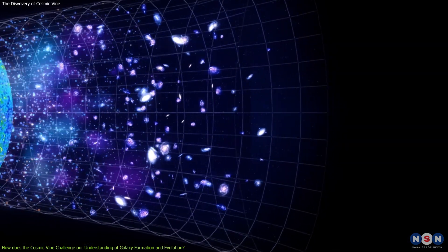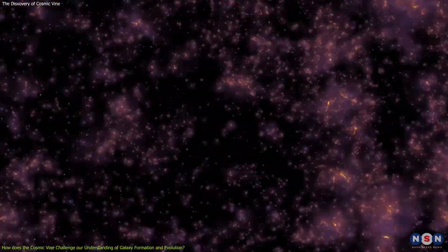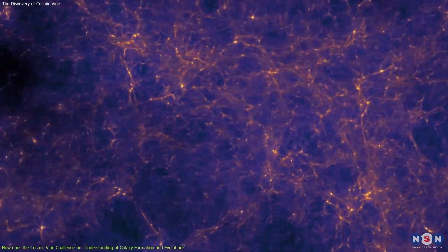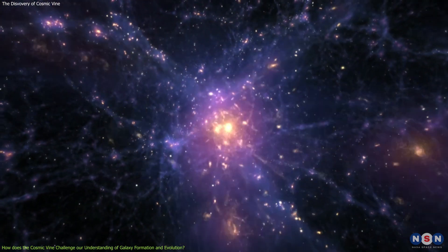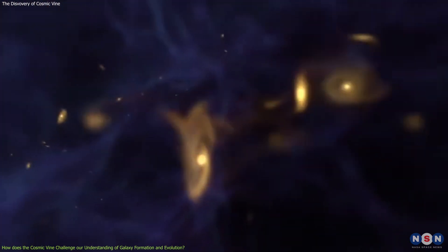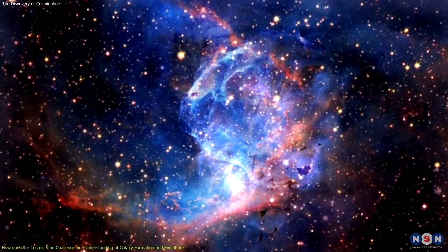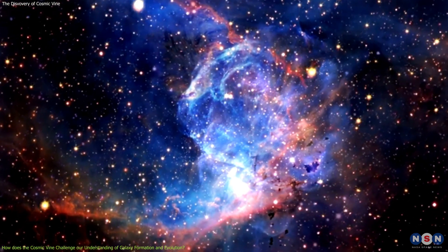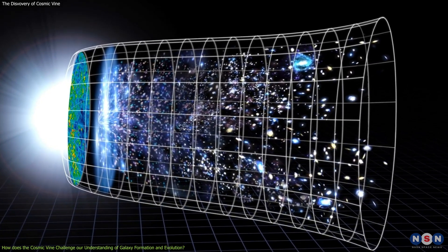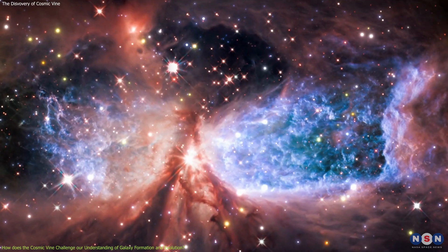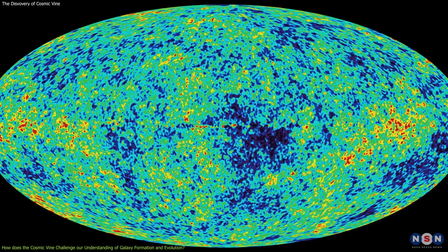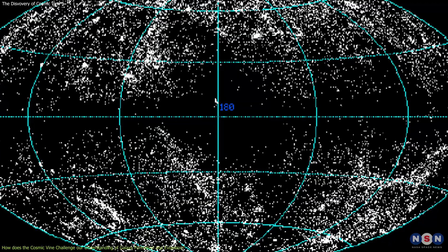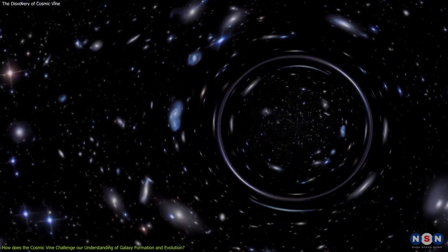According to this model, the first structures to form in the universe were small fluctuations in the density of matter, which grew under the influence of gravity and dark matter. These fluctuations eventually collapsed into the first stars and galaxies, which then merged and clustered into larger and larger structures, forming the cosmic web that we see today. The Lambda Cold Dark Matter model has been very successful in explaining many observations of the large-scale structure of the universe, such as the cosmic microwave background radiation, the distribution of galaxies, and the gravitational lensing effect.